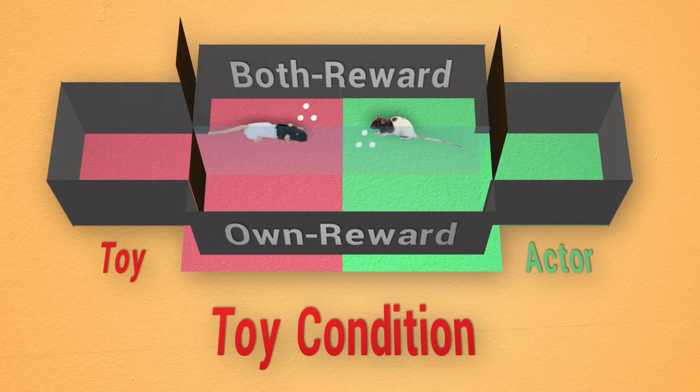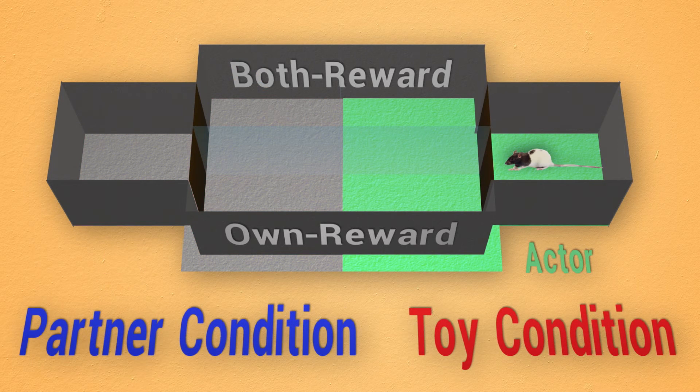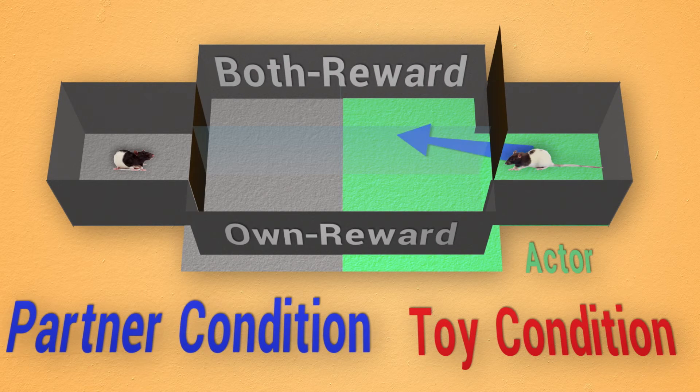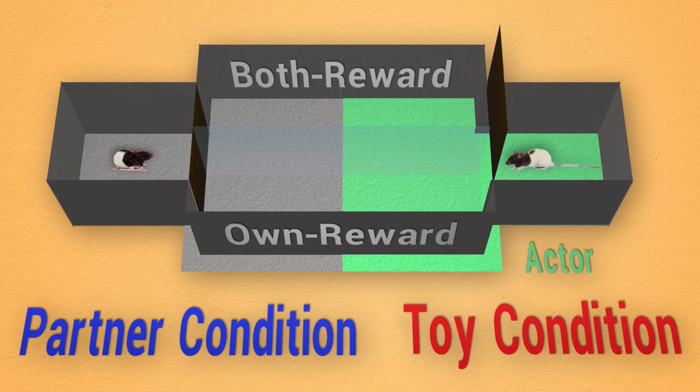We conjectured that if a conspecific's access to food carries reinforcing value for actor rats, they should develop a preference for the both-reward alternative in the partner but not the toy condition.